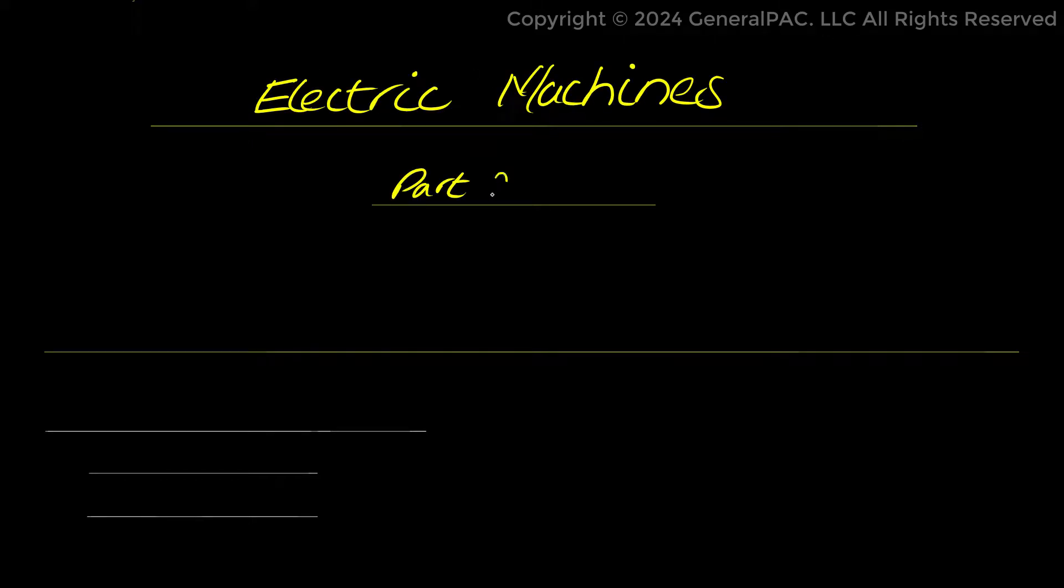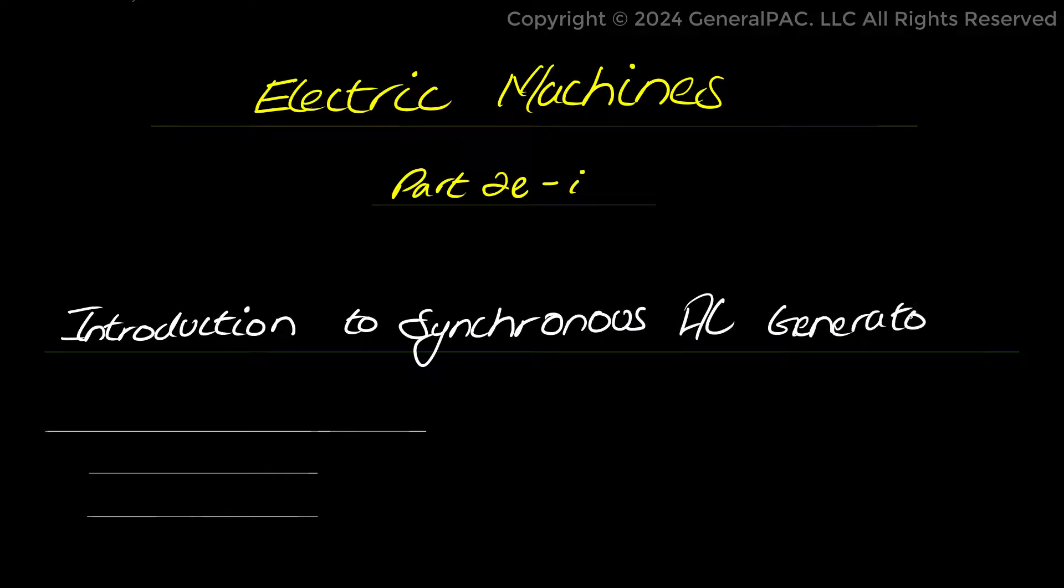Electrical Machines, Part 2E1, Introduction to Synchronous AC Generators. This is the fifth part of Topic 2 in the series of Electrical Machines. We had an introduction of AC machines in the previous part, and in this video we are going to discuss about AC Synchronous Generators, their working and different methods of excitation.